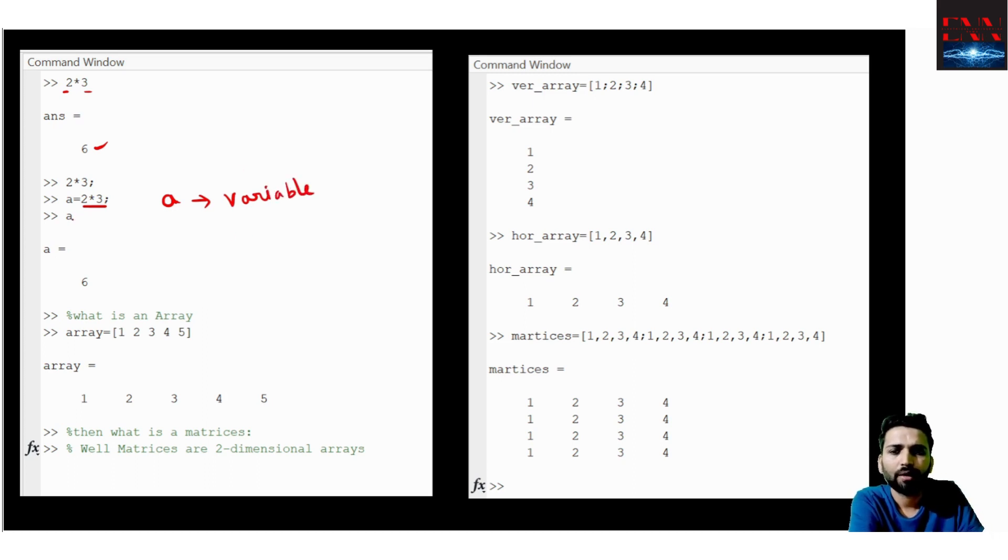When I am prompting A, A is showing that the value stored in the A variable is 6, which we already know that 2 into 3 I have assigned to A, so 2 into 3 is 6. This you can do with multiple operators. I am using multiplication operator which is asterisk. You can use anything and solve anything.